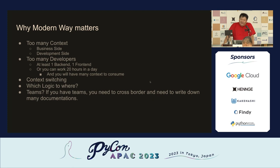Why do modern ways matter? Too many contexts — there is a business-side context and a development-side context. And too many developers: at least one back-end and one front-end in recent years. You might try to work 20 hours a day, but still you have many contexts to consume. So there is a lot of context switching, and you need to find out which logic should go where.